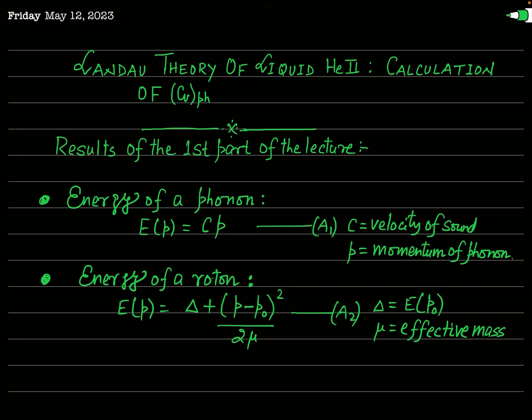As I have told you, this is a very rigorous theory, so we have to divide this lecture into different parts. In this second part, we are going to calculate Cv_ph, which means the contribution of phonons to the specific heat capacity at constant volume of liquid helium 2. This calculation will need some important results discussed in the first part of the lecture, so here I am just writing those important results as a summary.